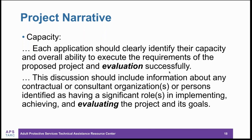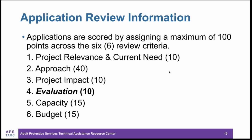Moving on to the capacity section, evaluation is mentioned twice. Evaluation should be carried out by someone or a team with the capacity to conduct the proposed evaluation activities. In the application review information section, the total score reviewers will give is 100. Even though evaluation seems to only occupy 10% of the whole application, evaluation is actually impacting approach, project impact, evaluation itself, capacity, and the budget section.